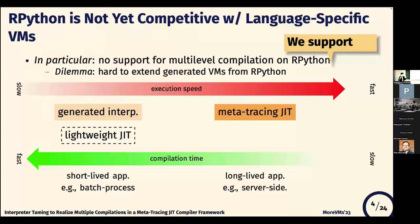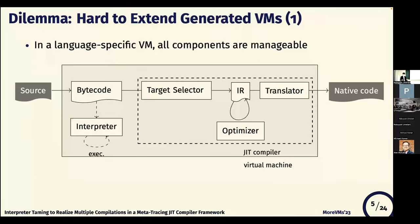We have a dilemma: how to extend generated VMs from RPython. This figure shows the simplified VM components. The VM has an interpreter and a just-in-time compiler, including a front-end sector, IR, IR optimizer, and translator. When source code is loaded on this VM, it is compiled into bytecode, first interpreted by the interpreter, and when a hotspot is detected, the bytecode is picked by the front-end and converted to IR, optimized many times, and finally translated to machine code.